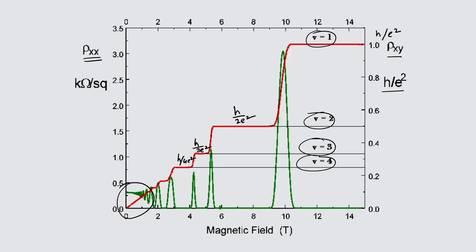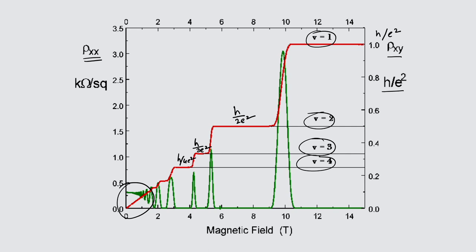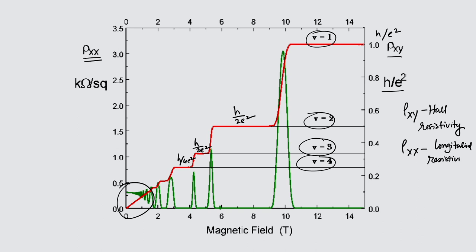Let me connect with the discussion we were having last time about the quantization of the Hall plateaus. This is the quantum Hall effect, famous for its quantized plateaus. We have to understand the origin of these plateaus and how they are so robust to disorder and impurities, and also understand the green plots which represent rho_XX, the magnetoresistance or longitudinal resistance. Rho_XY is called Hall resistivity and rho_XX is called longitudinal resistivity or magnetoresistivity — the resistivity arising because of the magnetic field.